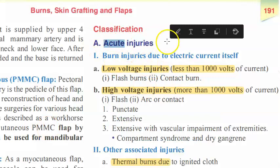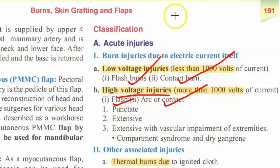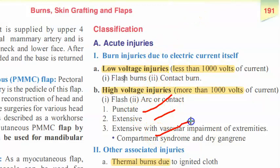In classification you have acute injuries and delayed injuries. In acute injuries, based on voltage, you have low voltage injuries and high voltage injuries. Low voltage includes flash burns and contact burns. High voltage includes arc burns, flash burns, punctate burns, extensive burns, and extensive burns with vascular impairment of extremities, compartment syndrome, and dry gangrene.